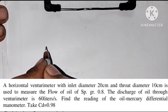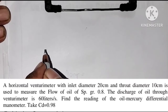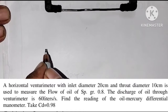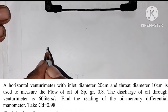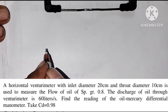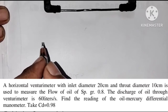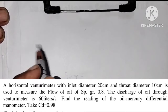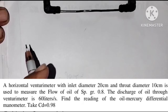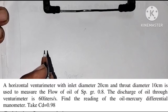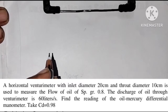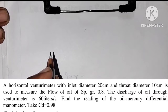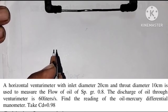A horizontal venturimeter with inlet diameter 20 cm and throat diameter 10 cm is used to measure the flow of oil of specific gravity 0.8. The discharge of oil through the venturimeter is 60 liters per second. Find the reading of the oil-mercury differential manometer. Take Cd equal to 0.98.